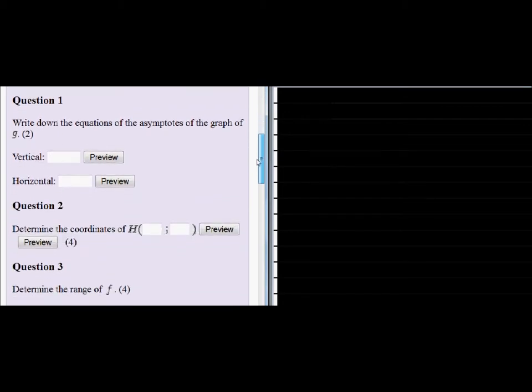Question 1. Write down the equations of the asymptotes of the graph of g. So we have g is equal to negative 16 over x. So we must get the asymptotes.